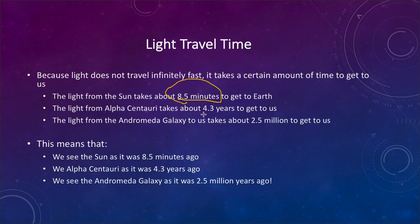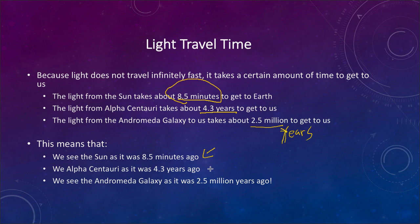If we look at the nearest star, Alpha Centauri, it would take about four years for light to get to us. So the light we see coming from Alpha Centauri now is not the light currently leaving it, but the light that left it a little over four years ago. The Andromeda galaxy is about two and a half million light years away, so it takes about two and a half million years to get to us. That means we see the Sun as it was eight and a half minutes ago, Alpha Centauri as it was four years ago, and the Andromeda galaxy as it was two and a half million years ago.